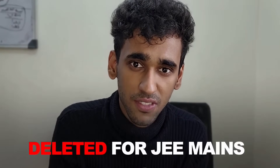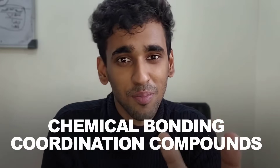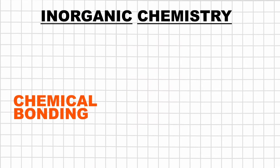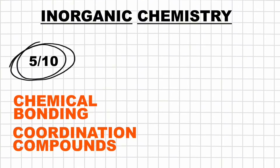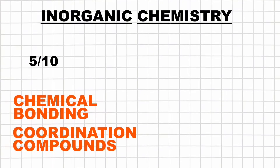Let's start off with the inorganic section. Inorganic seems difficult because so many chapters were deleted for JEE Mains — what should we actually focus on? There's a very simple trick: two chapters are very important — chemical bonding and coordination compounds. If you have a strong hold over these two, you will get at least three to five questions from them, so out of 10 inorganic questions, you've already secured three to five.